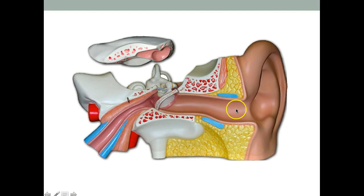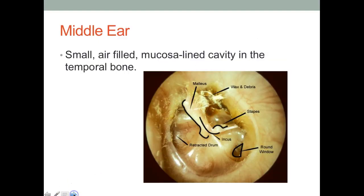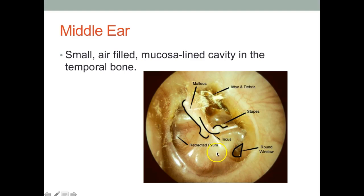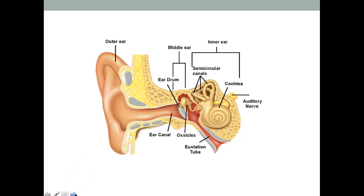Next we have the middle ear, which is a small air-filled cavity in the temporal bone. These are the three ossicles — the little bones called malleus, incus, and stapes. They basically receive vibration from the eardrum and carry it to the inner ear area.